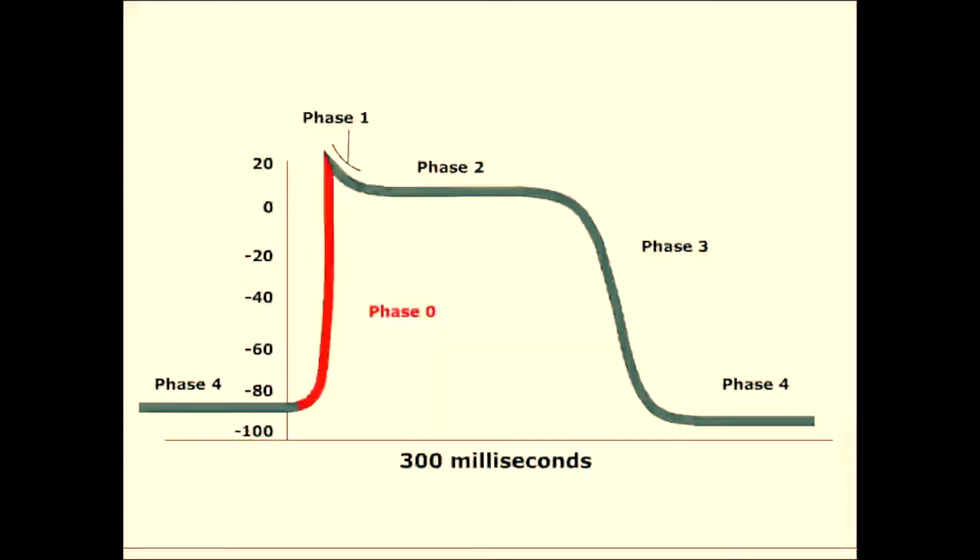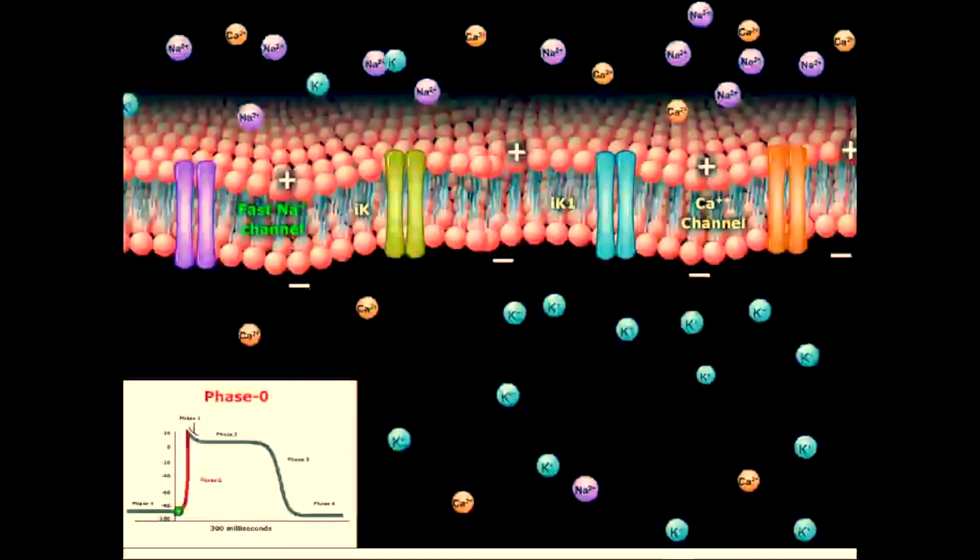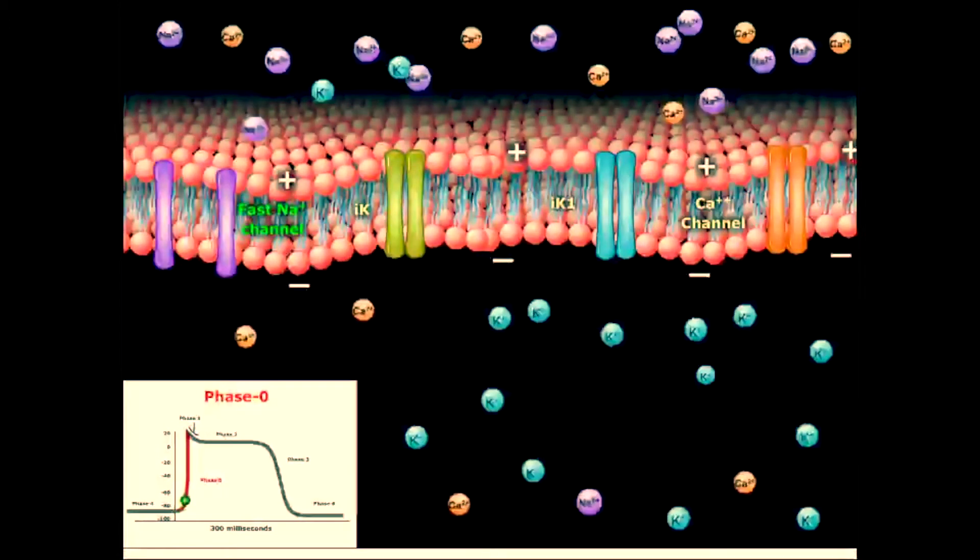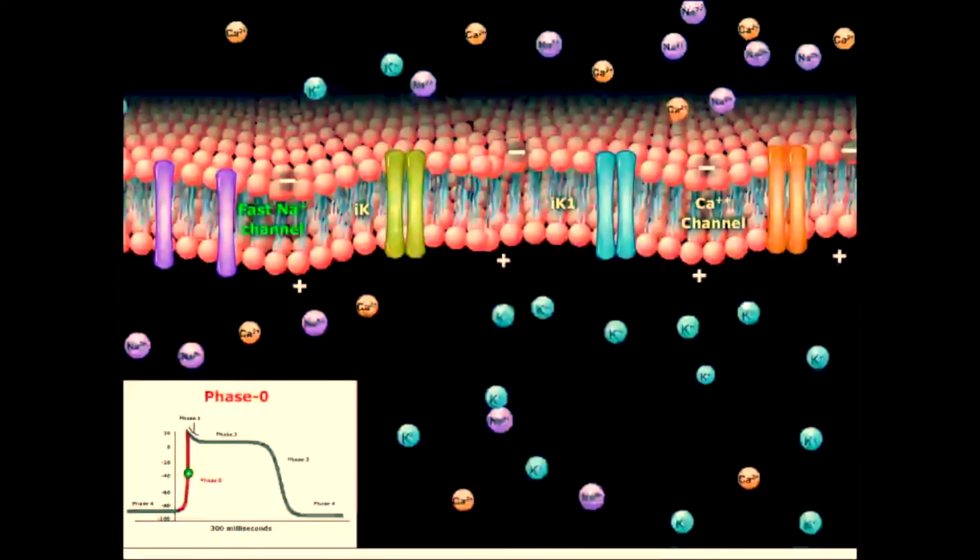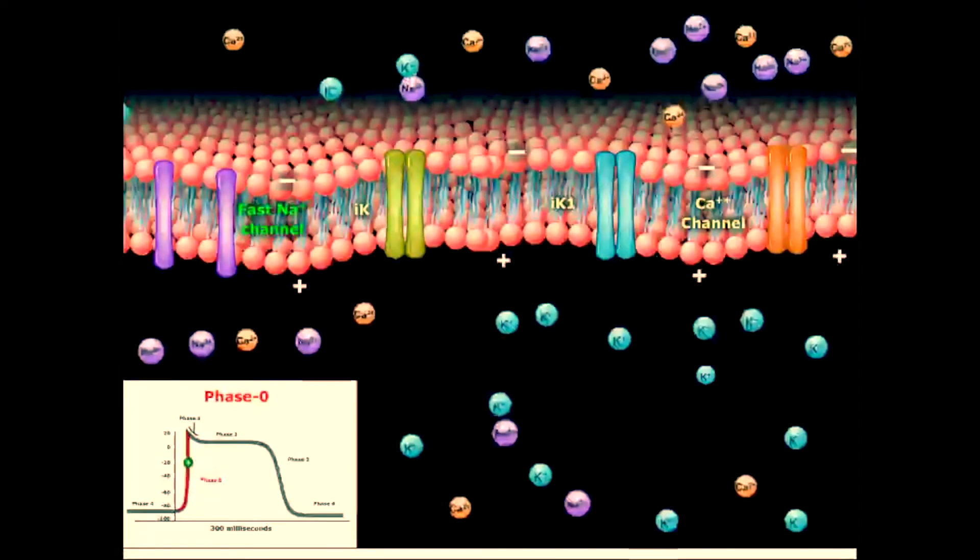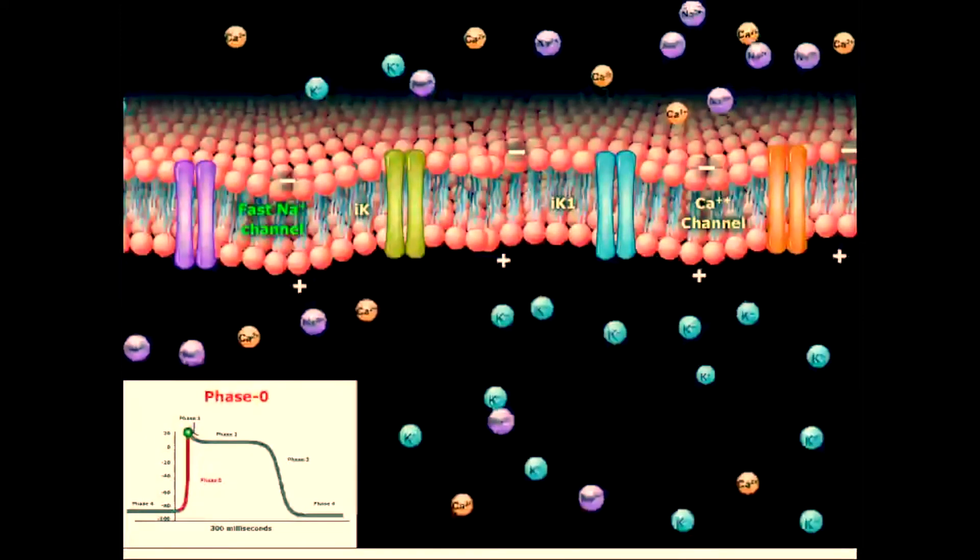Once electrically stimulated, a myocyte proceeds to phase 0. Phase 0 is the rapid depolarization phase. This phase is the result of fast sodium channels opening. This causes a rapid influx of sodium that induces a reversal of transmembrane voltage. The inner surface now becomes positively charged, and the outer surface negatively charged.